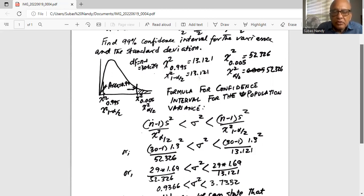And we substitute the value in the two lower boundary and the upper boundary we get 30 minus 1, sample size minus 1, multiplied by standard deviation square which is 1.3 square divided by 52.326, which is the right critical value of chi-square, less than sigma square, less than 30 minus 1 times 1.3 square divided by 13.121, which is the chi-square critical value in the left tail.